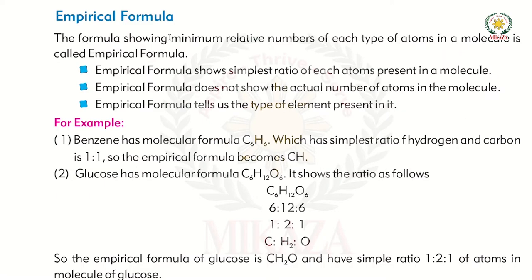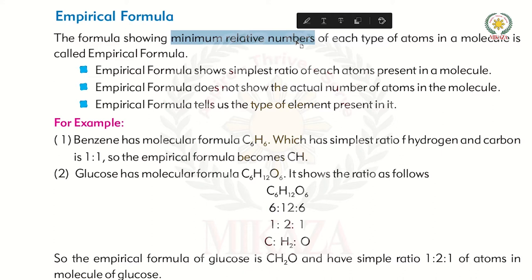Empirical formula means we use minimum relative numbers. That means in the chemical formula given, we take the numbers, use a ratio, and simplify it. For example, take C6H12O6.